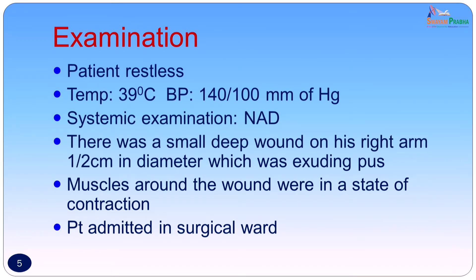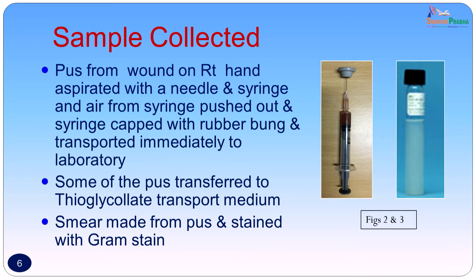On examination the patient was restless, the temperature was 39 degrees centigrade, and BP was slightly raised at 140 by 100 mmHg. Systemic examination revealed no abnormality. There was a small deep wound on his right arm, half a centimeter in diameter, which was exuding pus. The muscles around the wound were in a state of contraction. The patient was admitted to the surgical ward. A sample was collected to confirm the clinical diagnosis — pus from the wound was aspirated with a needle and syringe, air was pushed out, the syringe was capped with a rubber bung, and transported to the laboratory immediately.